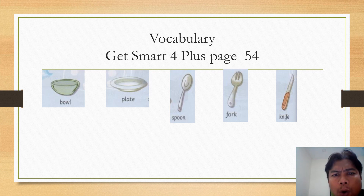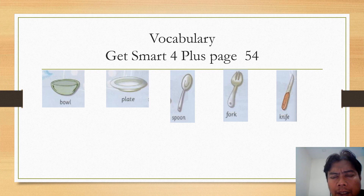And then let's go to page 54 — this is the tableware: bowl, plate, spoon, fork, knife. You have to refer to pages 54, 53, and 52 to do the activity after this.